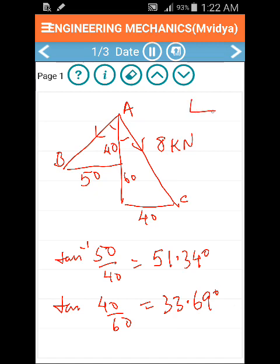AB and AC can be resolved into X and Y components. Let us keep the horizontal as X, vertical as Y. Since the net force is in the vertical direction, the horizontal components cancel each other.